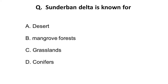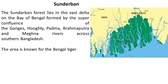Next question: Sundarban delta is known for? Options are: A) Desert, B) Mangrove forest, C) Grasslands, D) Conifers. This question is included because Sundarban delta has often been in the news in the last decade due to degradation of its mangrove forest. The correct answer is B) Mangrove forest.